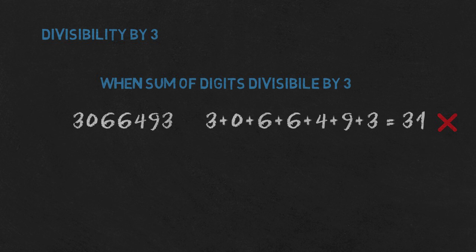Quite quick, but we can do better. When adding digits, you intuitively ignored 0 because it makes no difference to the result. But we can do the same for 3, 6, and 9 — they also make no difference to whether the sum is divisible by 3. So in this example we ignore 3, 0, 6, 6, 9, and 3, and we are left with just 4, which is not divisible by 3. Nothing to count.